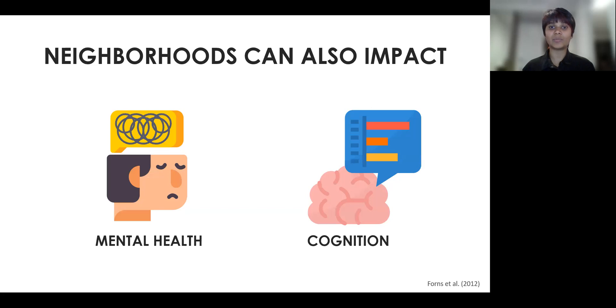And for children, the neighbourhoods can impact mental health and cognition. For example, children who grew up in poor neighbourhoods tend to have greater mental health problems and worse cognitive and academic performance.